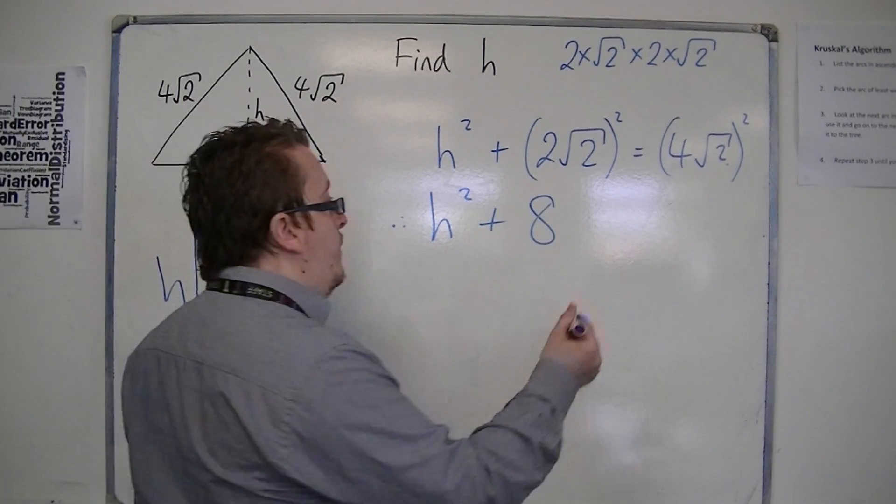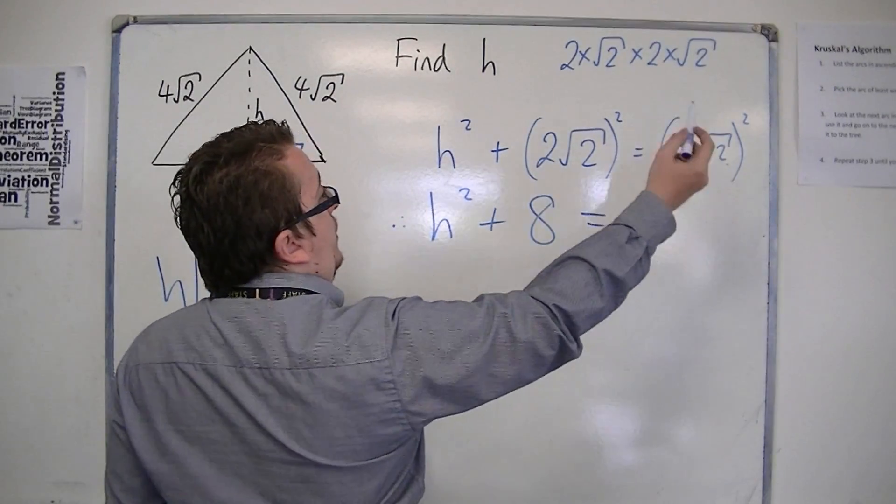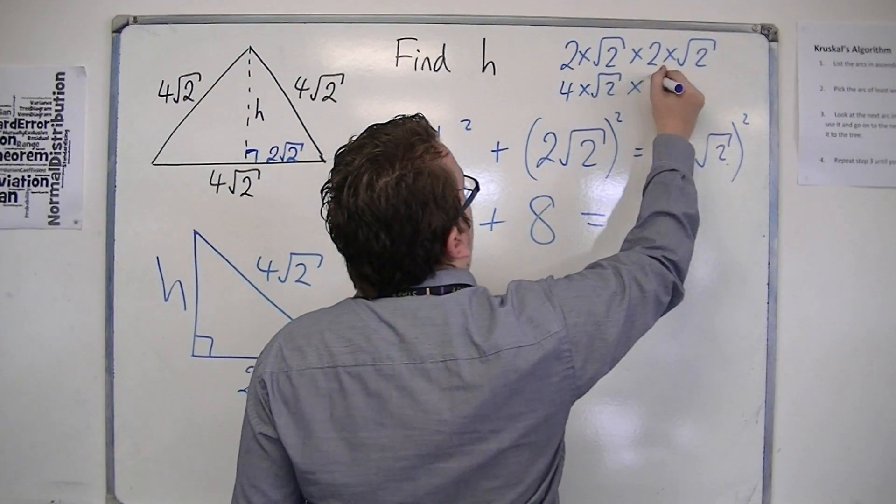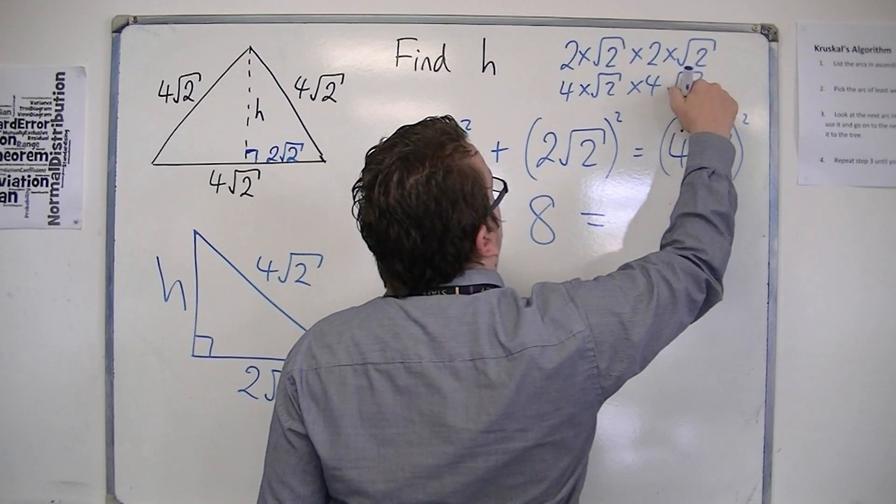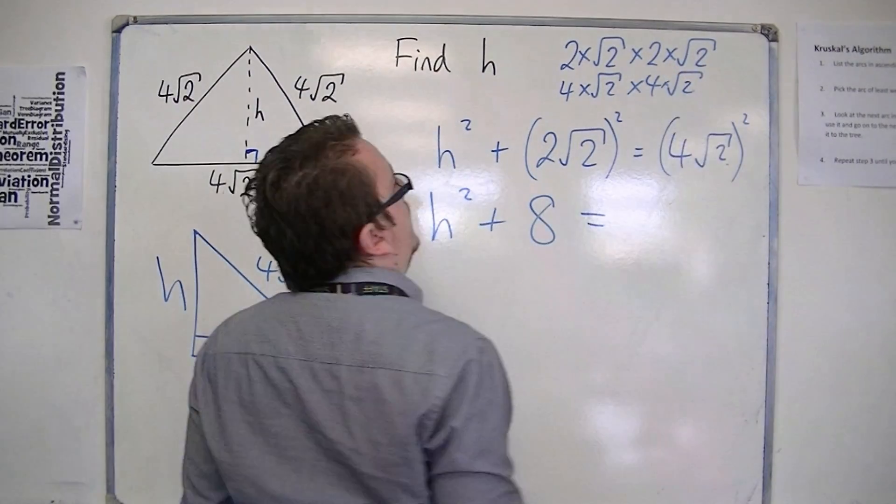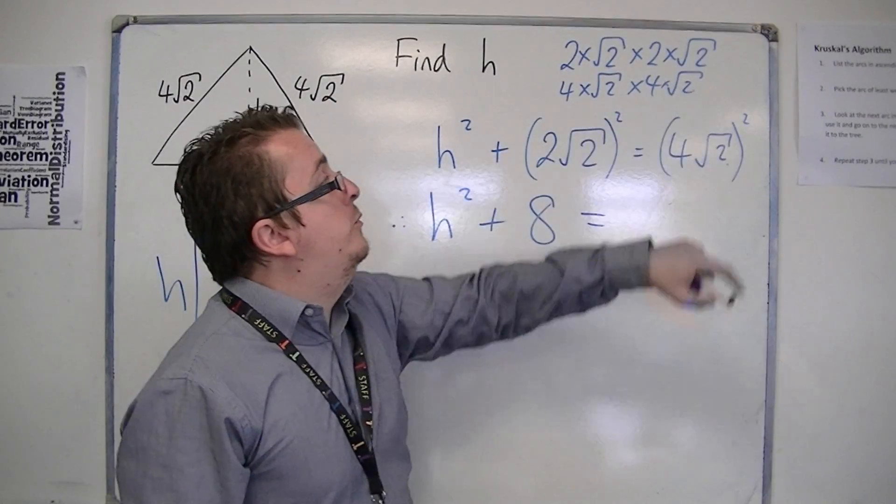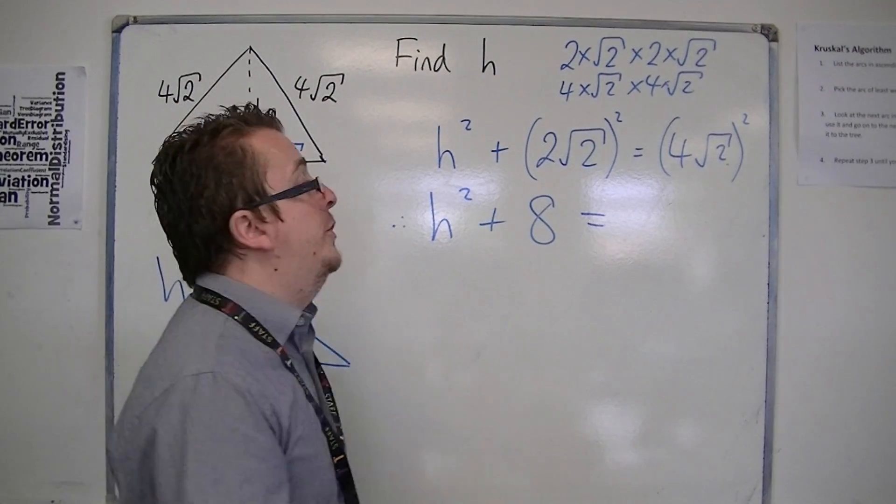Then we have 4 root 2 times 4 root 2. So that's 4 times root 2 times 4 times root 2. So you have 4 times 4 is 16, root 2 times root 2 is 2. So 16 times 2 is 32.